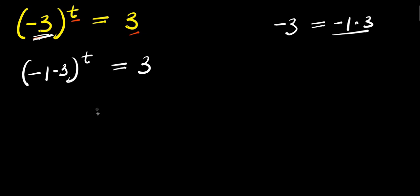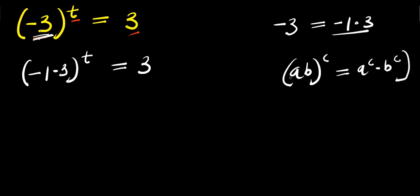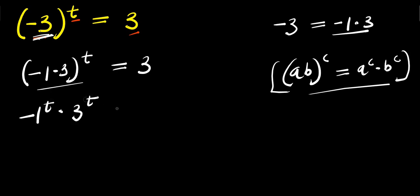Now we consider this identity: if you have a times b raised to the power of c, this equals a to the power of c times b to the power of c. We apply this right here, giving us negative one to the power of t times three to the power of t, and this equals three.